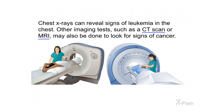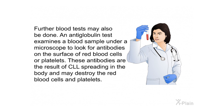Chest X-rays can reveal signs of leukemia in the chest. Other imaging tests such as a CT scan or MRI may also be done to look for signs of cancer. Further blood tests may include an anti-globulin test, which examines a blood sample under a microscope to look for antibodies on the surface of red blood cells or platelets. These antibodies are the result of CLL spreading in the body and may destroy the red blood cells and platelets.